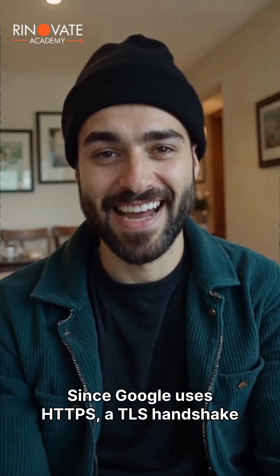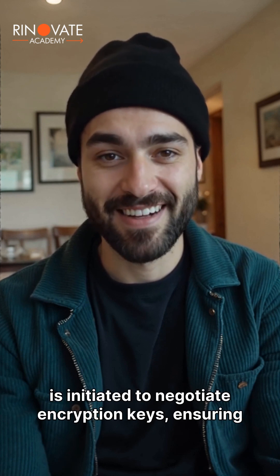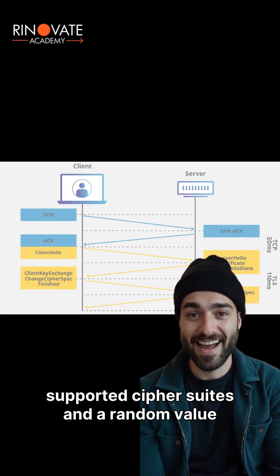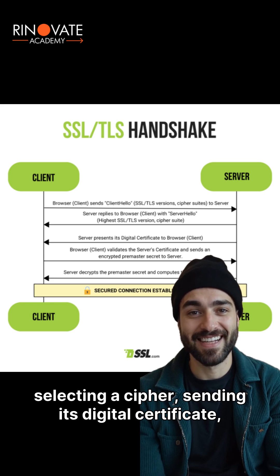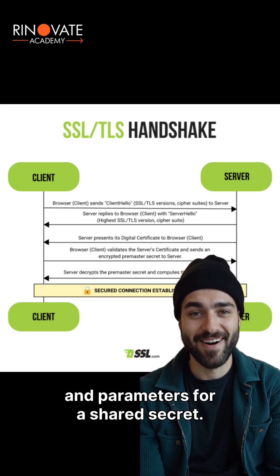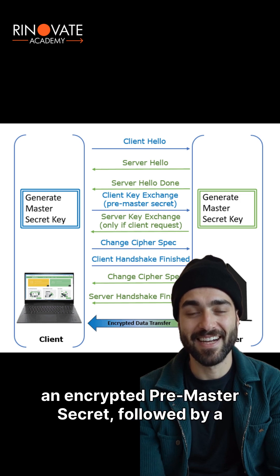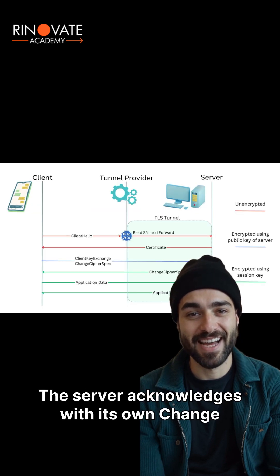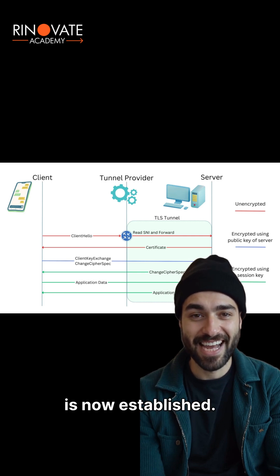Since Google uses HTTPS, a TLS handshake is initiated to negotiate encryption keys, ensuring secure communication. Your computer sends a client hello, indicating supported cipher suites and a random value for key generation. The server responds with a server hello, selecting a cipher, sending its digital certificate and parameters for a shared secret. After verifying the certificate, the client sends an encrypted pre-master secret, followed by a changed cipher spec message. The server acknowledges with its own changed cipher spec, and a secure, encrypted tunnel is now established.